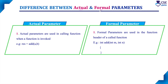If you understand the concept, this difference will be easy. The actual parameter is used in the calling function and the formal parameter is used in the called function. The calling function is the main function and the called function is nothing but the user-defined function.